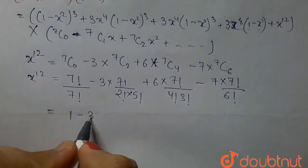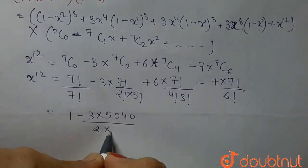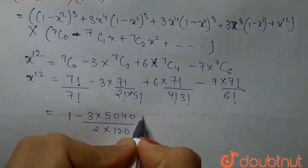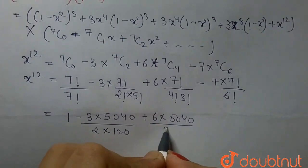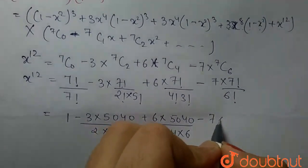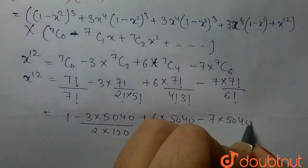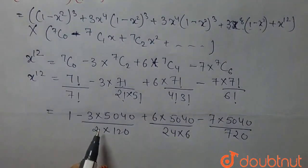So, we can put the value of factorials in the equation. So, we get 1 minus 3 into 5040 upon 2 into 120 plus 6 into 5040 upon 24 into 6 minus 7 into 5040 upon 720.